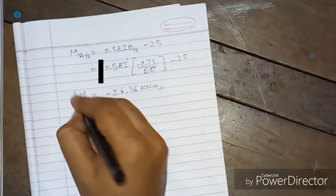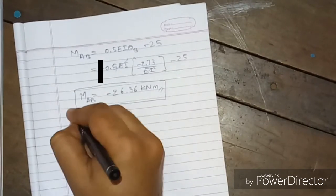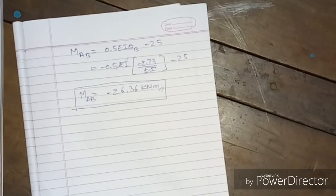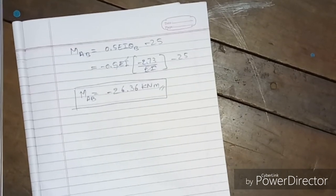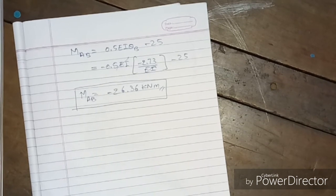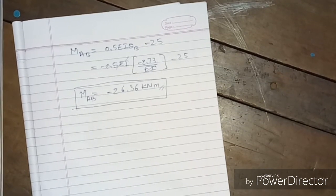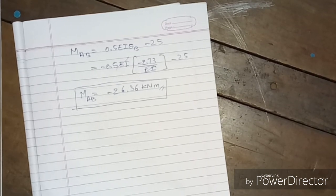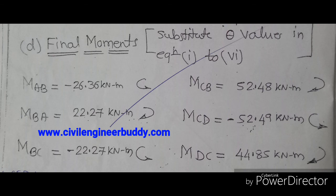Similarly, substitute θ_B and θ_C into all the moment equations — M_BA, M_BC, M_CB, M_CD, and M_DC — to get all final moment values at the individual supports. This completes the analysis of the beam using the slope deflection method.